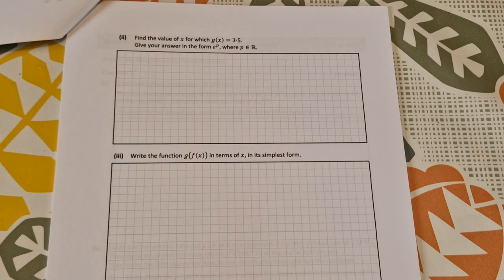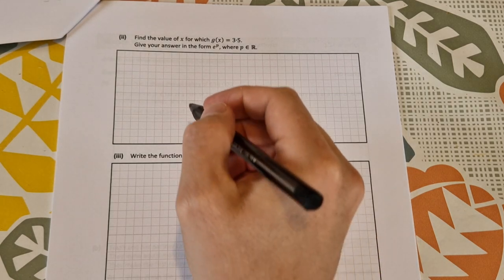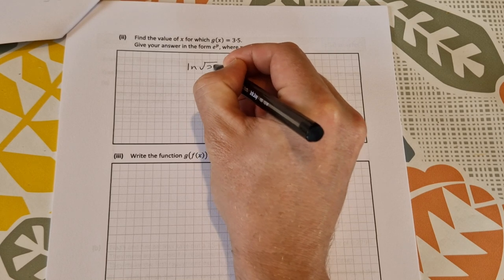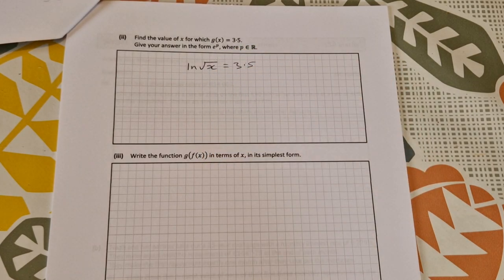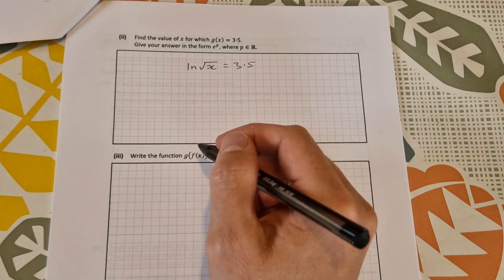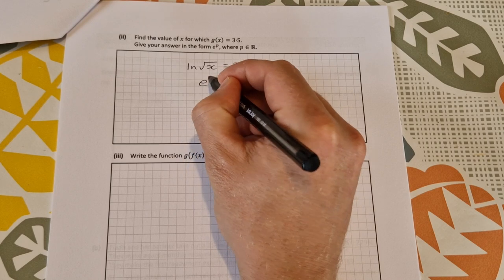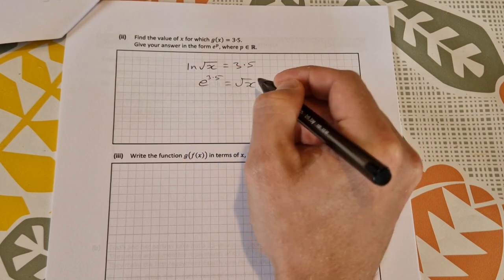Part 2 of b: find the value of x for which g(x) = 3.5, and give your answer in the form e^p. So that's ln(√x) = 3.5. We just need to go ahead and solve for x. If I change from log form to exponential form, that would be e^(3.5) = √x. Hopefully you can change from log form to exponential form.